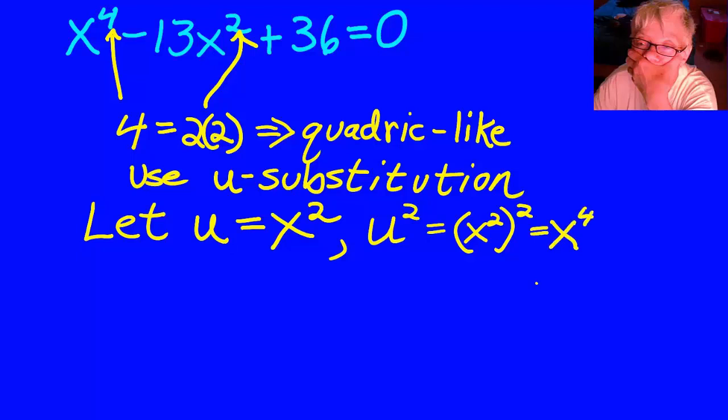That is so hard to say. But that gives us x to the fourth, so we can actually write the following quadratic equation based on our original equation: u-squared minus 13u plus 36 equals 0. And so we write it again, and we're going to solve this.